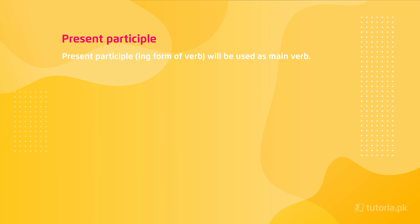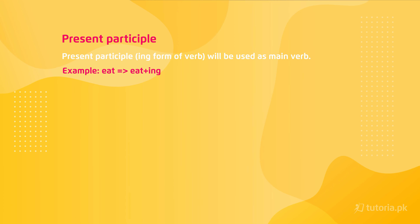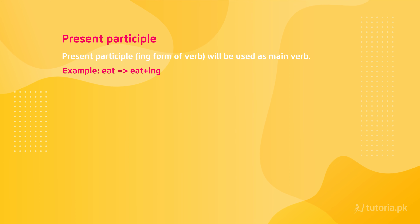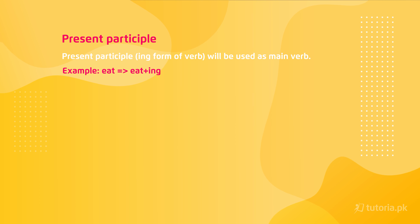This tense is also called present progressive tense. Coming towards the structure of this tense, present participle will be used. In present participle, when we include 'ing' in the main verb, that becomes the present participle. For example, eat — add 'ing' — that becomes 'eating.'